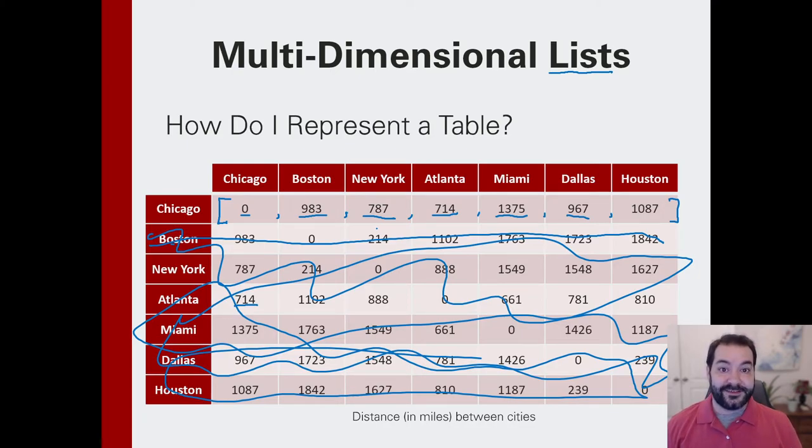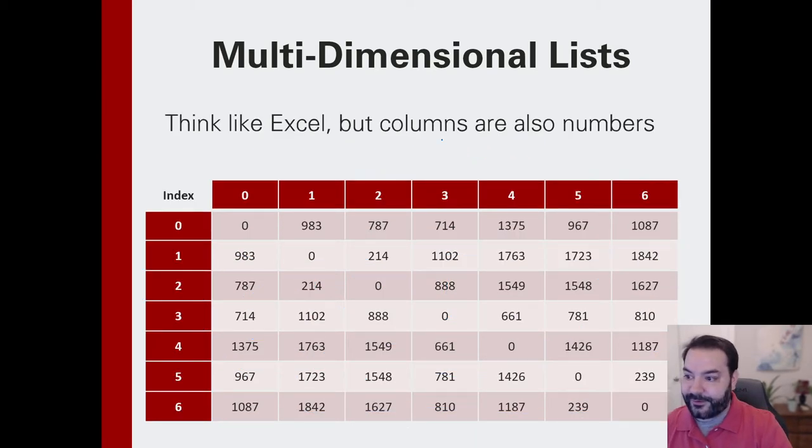What we're needing to do is specifically indicate, hey, which row am I on? And then, which column I'm on? And, we can do this by using more than one square bracket. So, if we think about this.